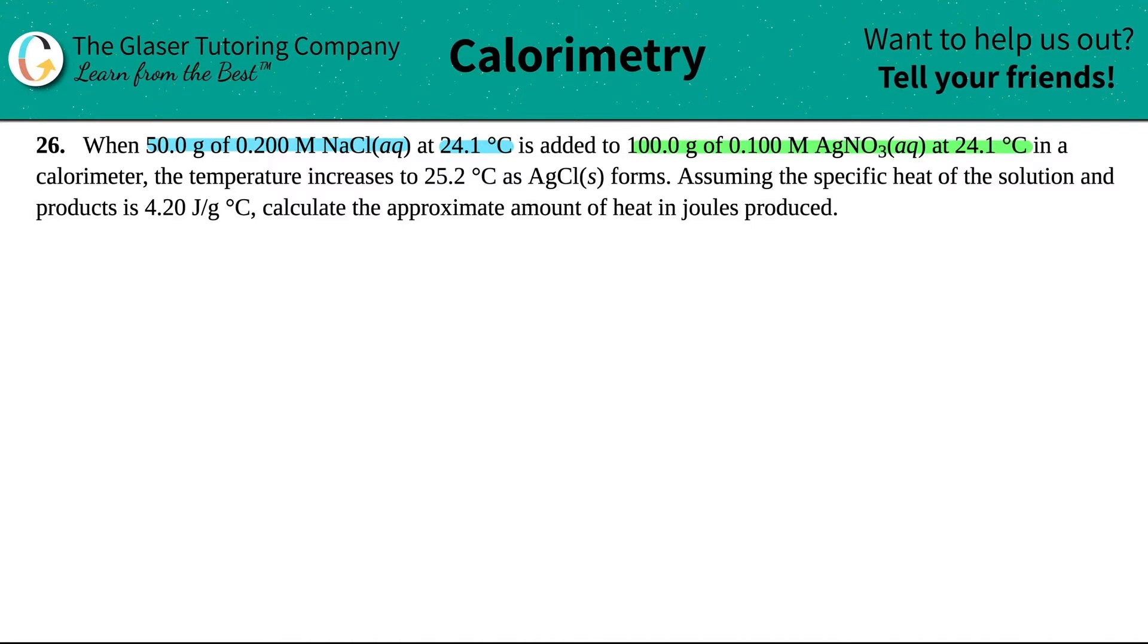The temperature increases to 25.2 degrees Celsius as the AgCl forms. Assuming that the specific heat of the solution and the products are 4.20 joules per gram degree Celsius, calculate the amount of heat in joules produced.